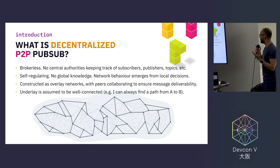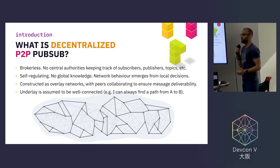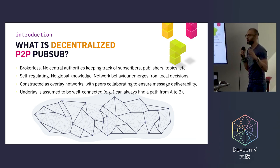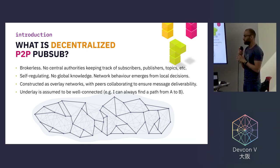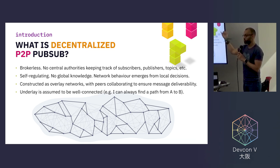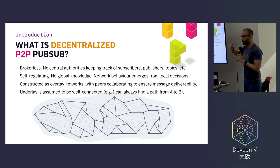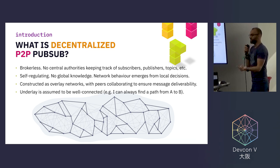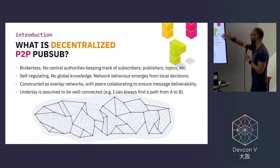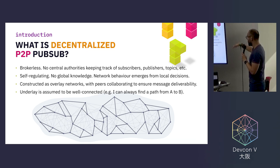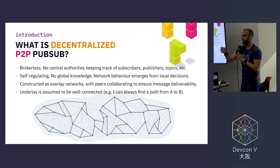What is decentralized peer-to-peer PubSub? First of all, it's broker-less — there are no central authorities to keep track of subscribers, publishers, or topics. It's self-regulating. Peer networks can rotate in presence very rapidly, so there is no global knowledge, no single peer that is an authority with a complete view of the network. Network behavior actually emerges from small, local decisions that peers are taking.